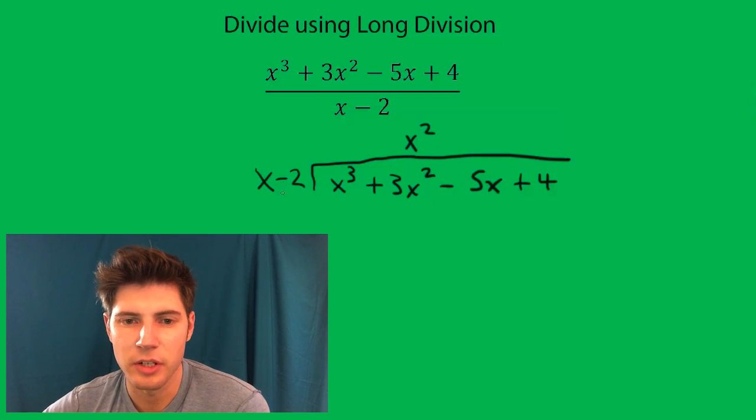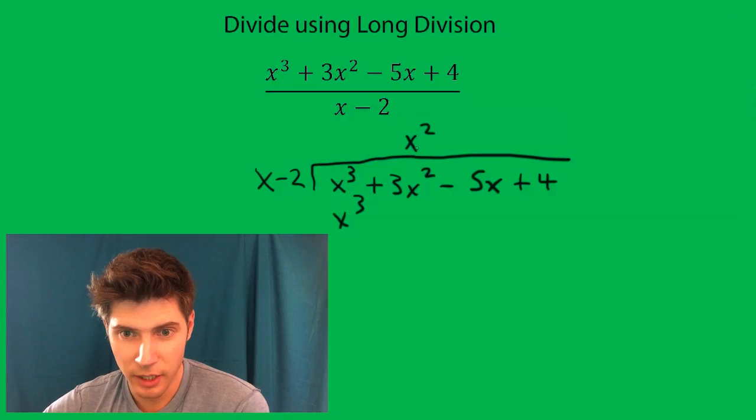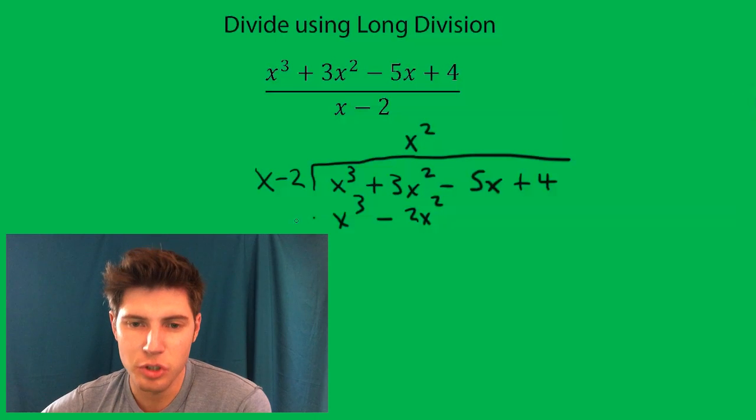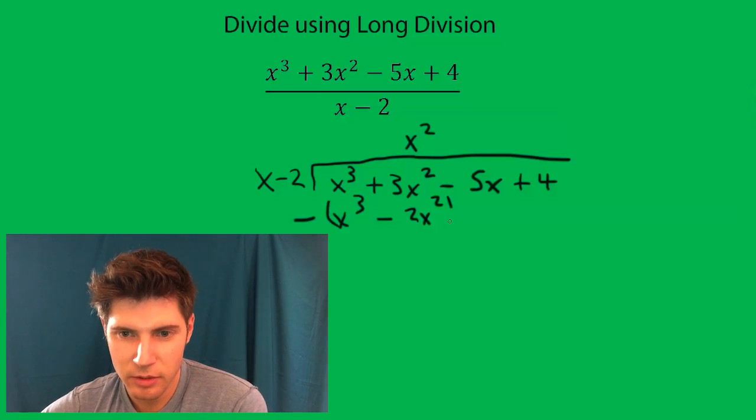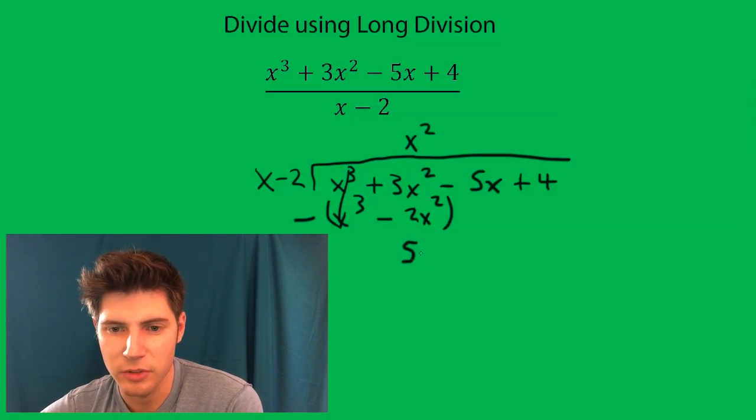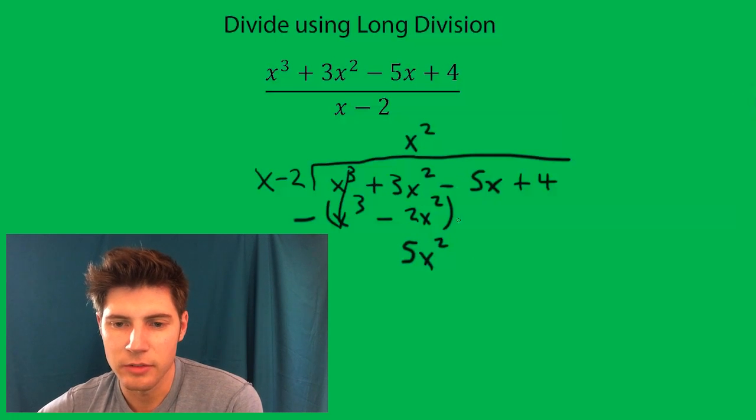So now x squared times x is x cubed and x squared times negative 2 is negative 2x squared. Now you're going to want to subtract this thing. So this minus this goes away and then this minus the negative is a plus. You're left with 5x squared and then you can bring down the 5x just like in elementary school.